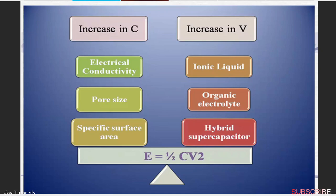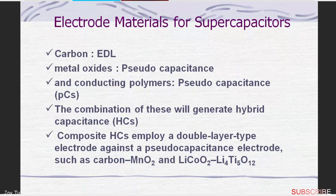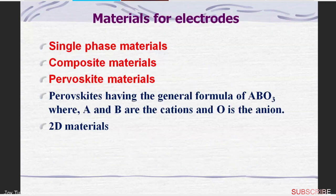The energy density is very less, so we wanted to improve the energy density of the system. That's why we are working towards this. As we discussed earlier, carbon-based electric double layer capacitors behave in a certain way. We are starting with simple materials, then going for composites.